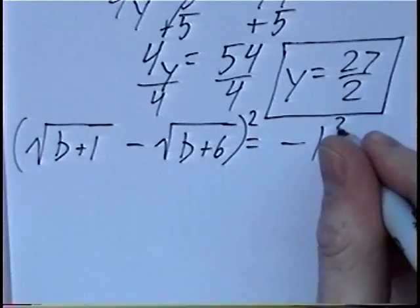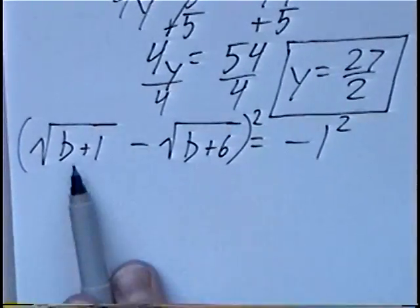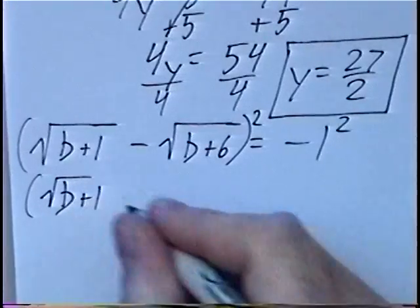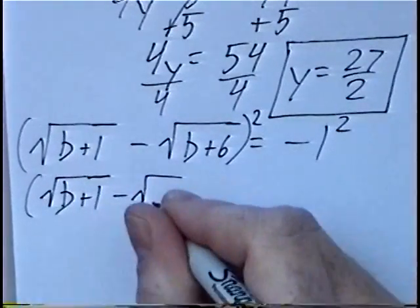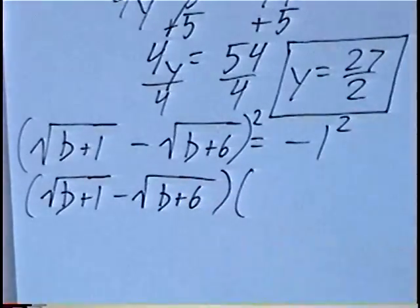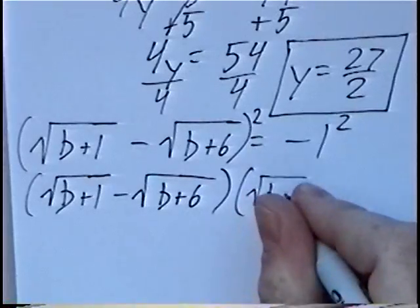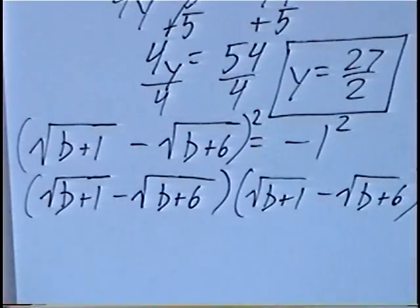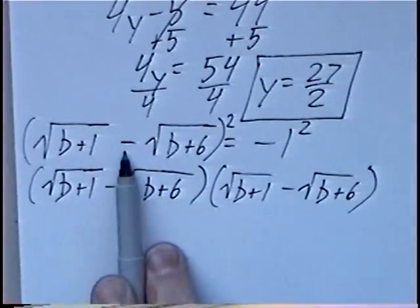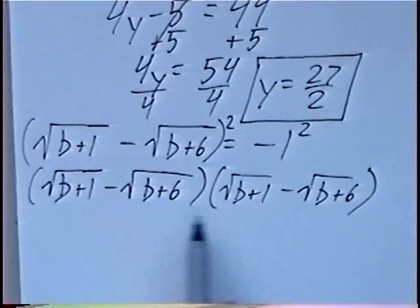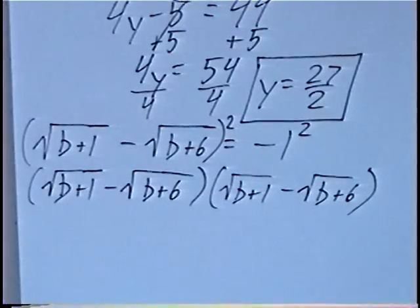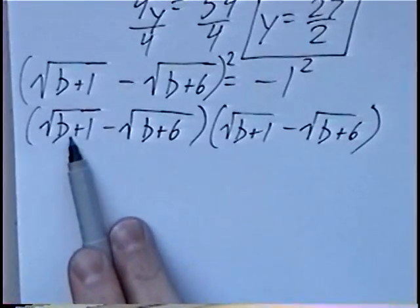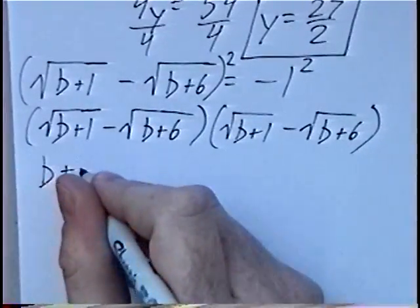Squaring the left side means taking a binomial of two terms and squaring it, which means we write the same parenthesis twice: radical b plus 1 minus radical b plus 6, multiplied by itself. To multiply it, we'll use FOIL. Radical b plus 1 times radical b plus 1 — if you multiply the same radical, the radical cancels and we're left with b plus 1.